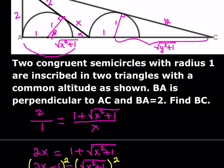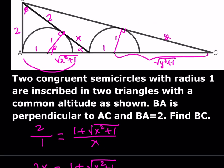How can we find y? Hopefully in a similar way using similarity. Let's call this angle theta. In the big triangle, we also have theta, and the other angle is going to be 90 minus theta. So this smaller triangle is basically similar to the largest triangle here, because this is a 90-degree angle.